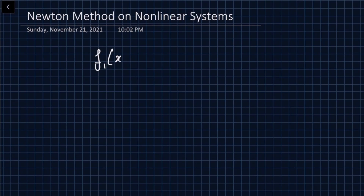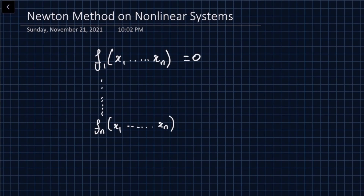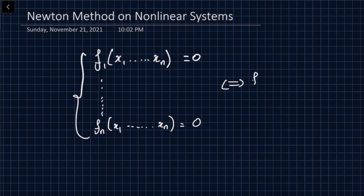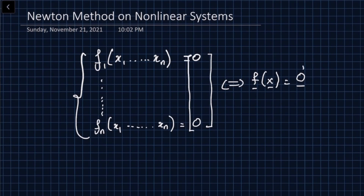We have not just one function and one variable, but instead n variables x1 down to xn and n functions. The goal is to find x1 through xn that set all these functions simultaneously to zero. In vector notation, f is a vector and x is a vector, all set to the zero vector — a compact way of writing the nonlinear system.